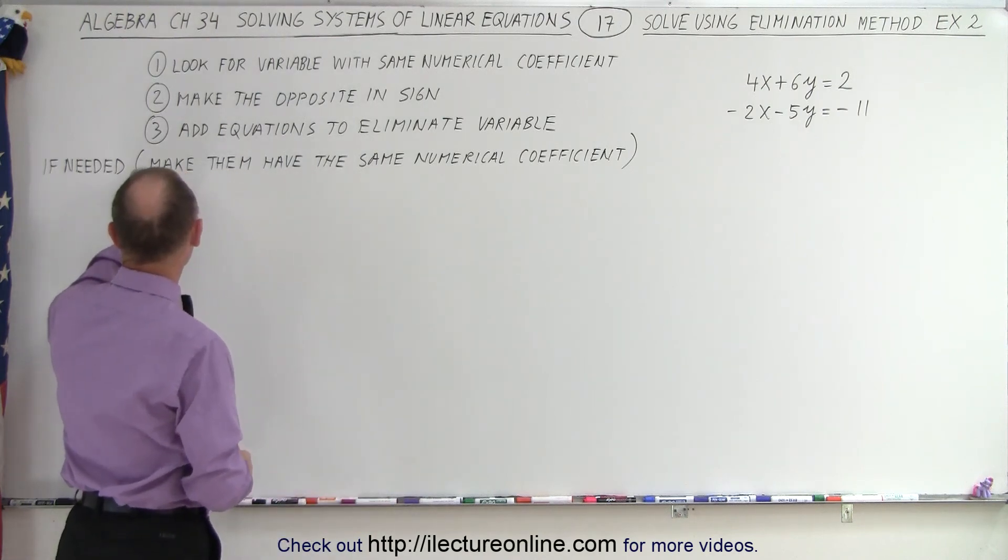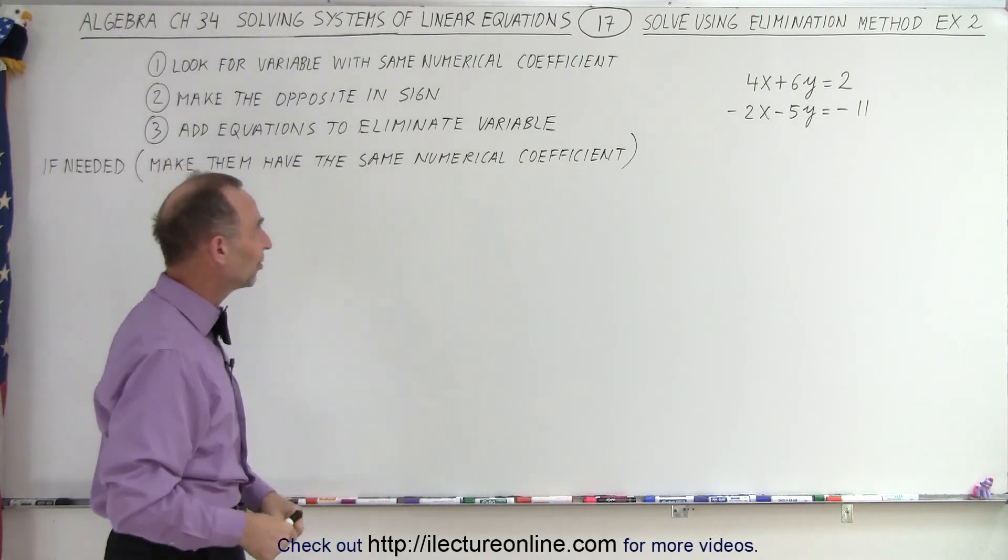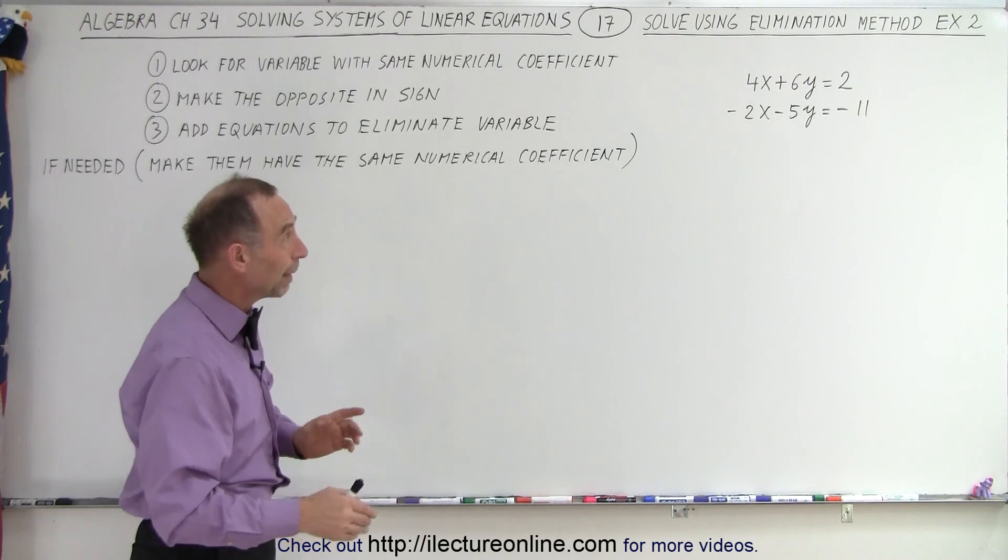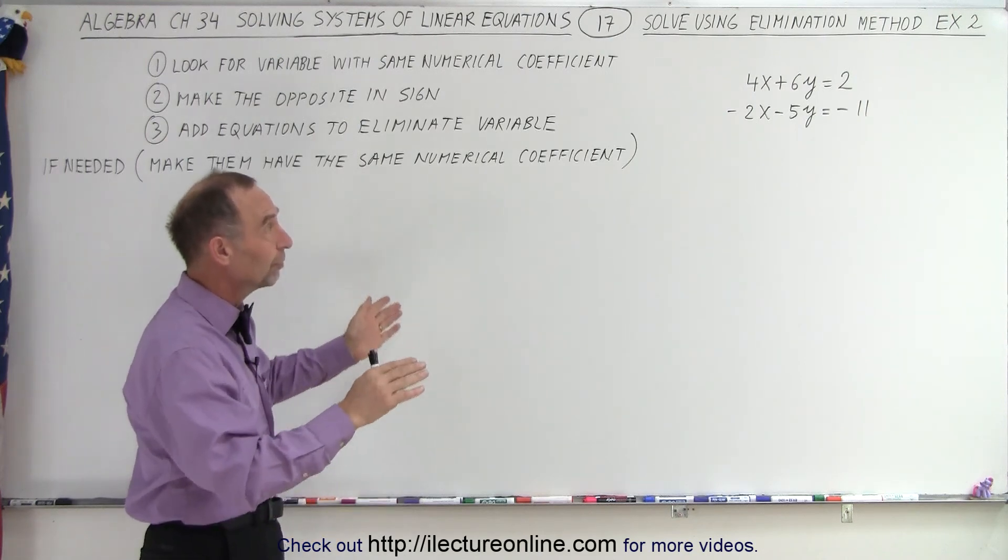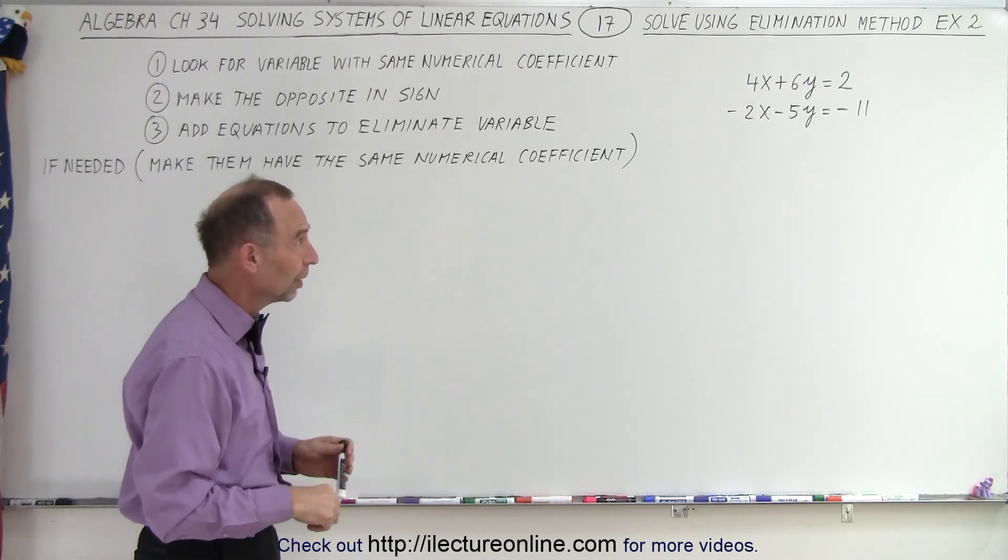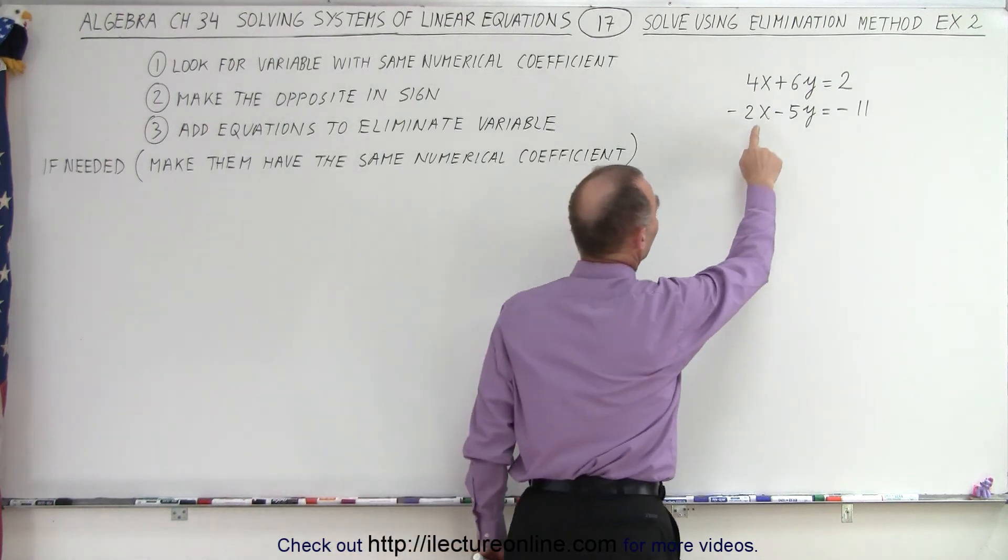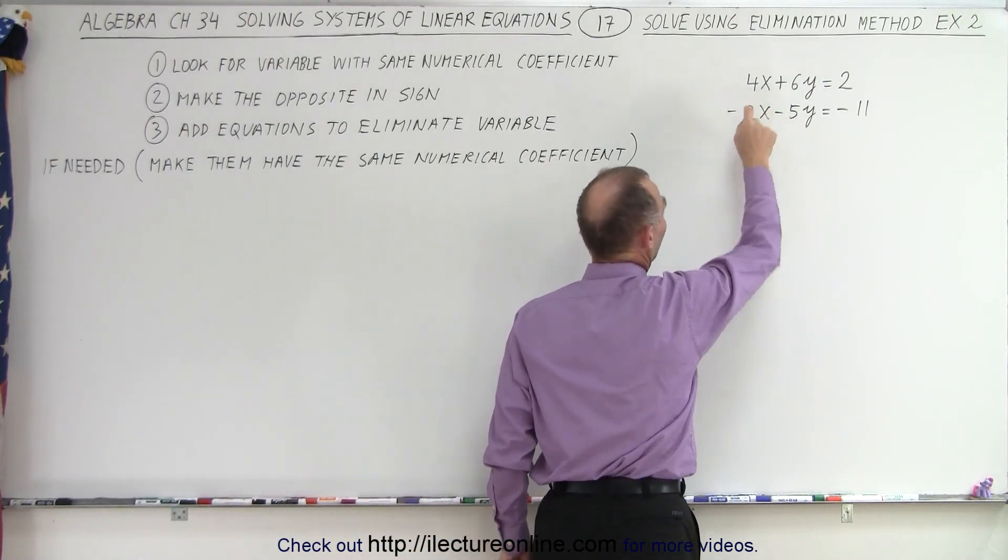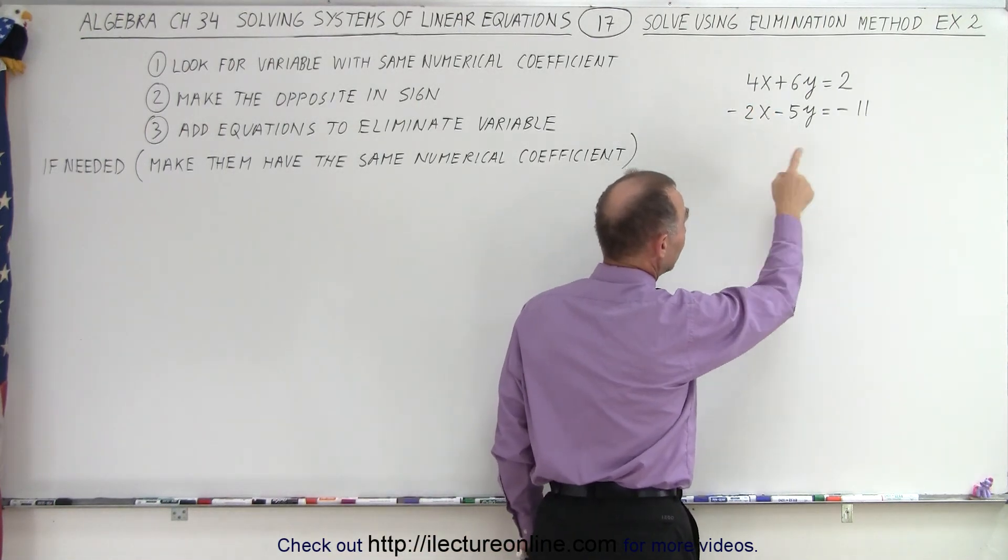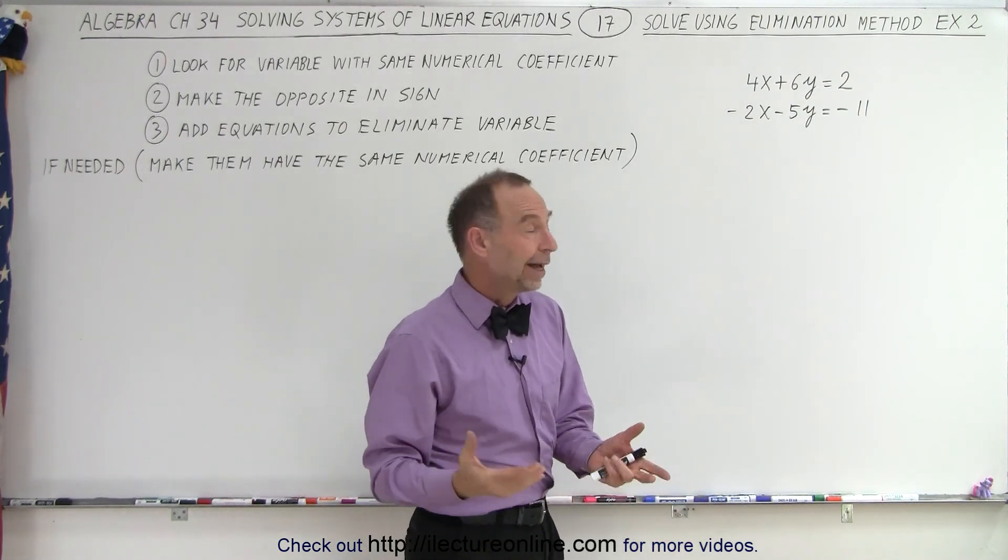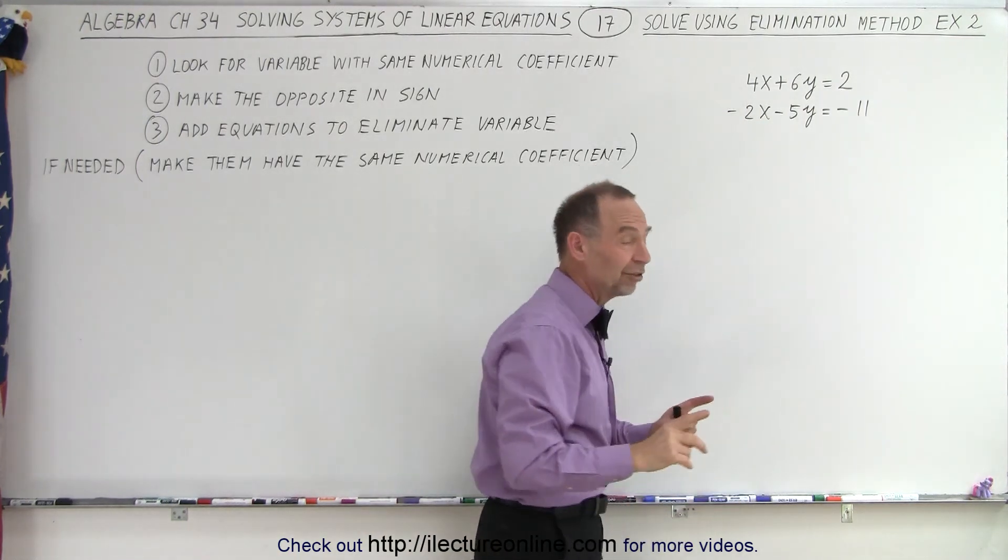So then we come to this step and say if needed, make them have the same numerical coefficient, and we do that by multiplying one or both of the equations with a constant. Now notice this one says 2X and this one says 4X. So if I multiply the bottom equation by 2, I get this to be 4X and now they have the same numerical coefficient.